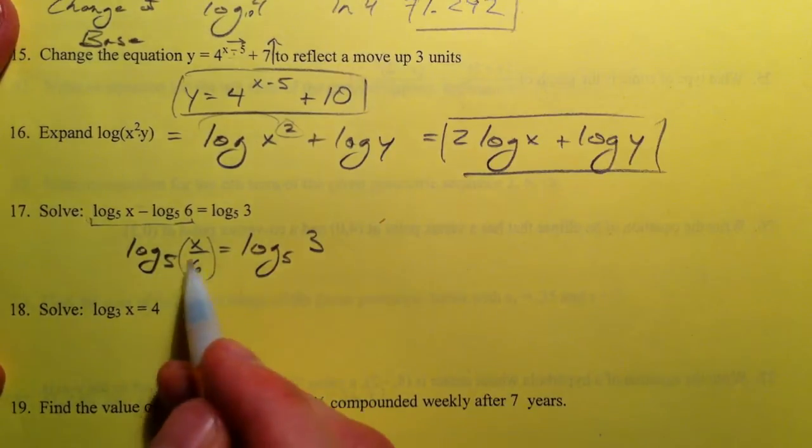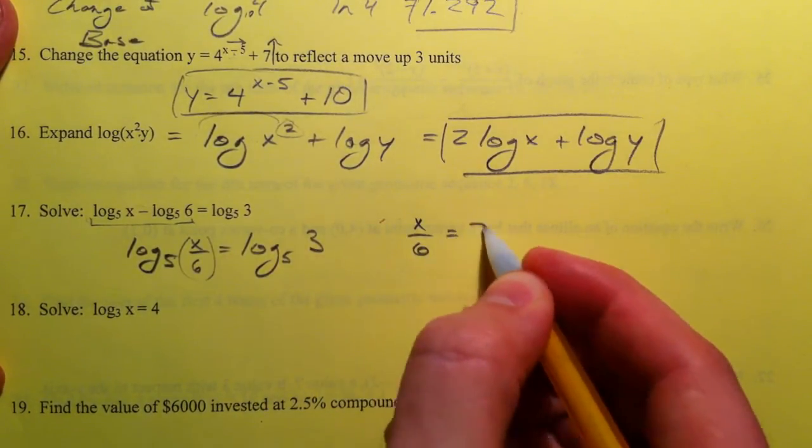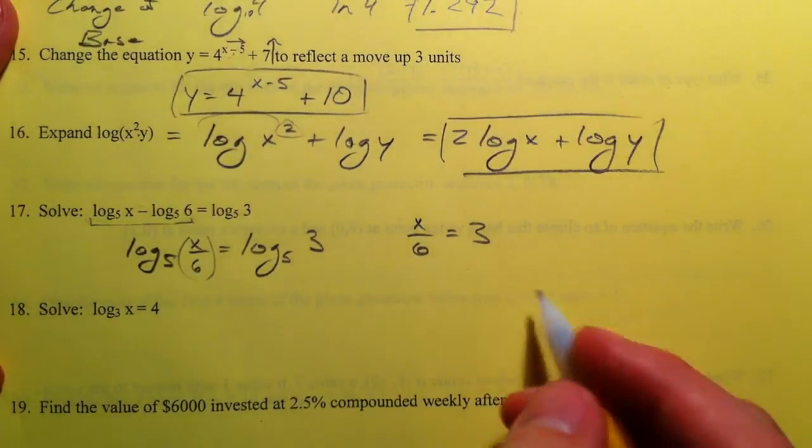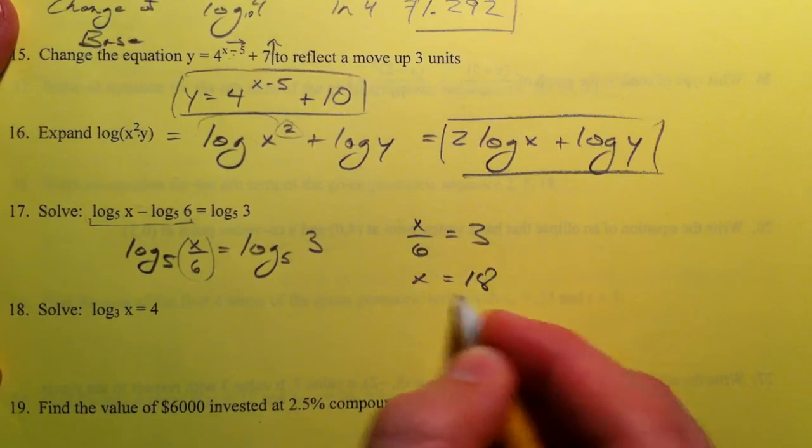Because we have the log base 5 of two things, the two things have got to be equal to each other. Then x equals, if I multiply both sides by 6, I get 18.